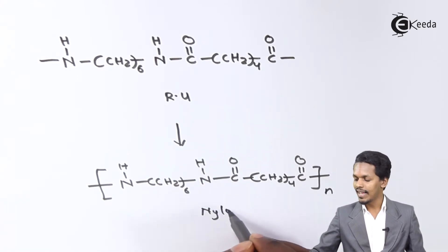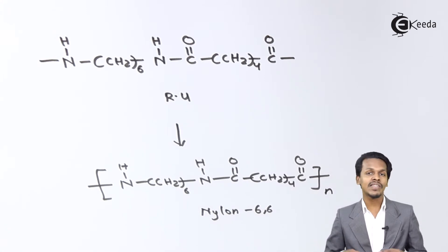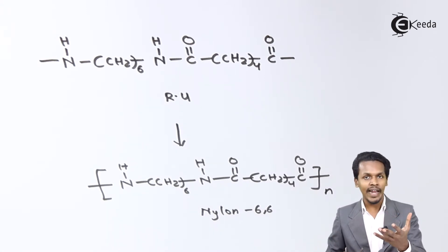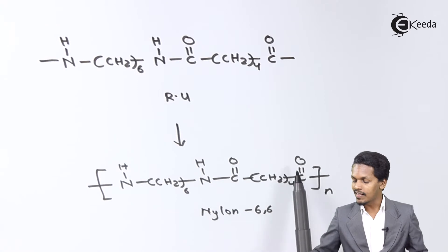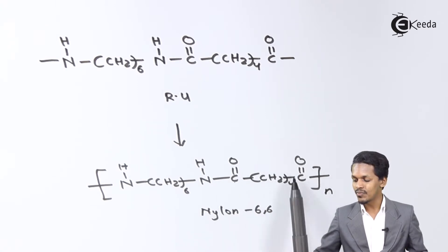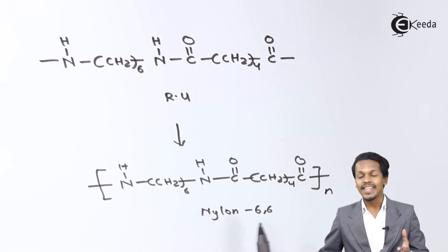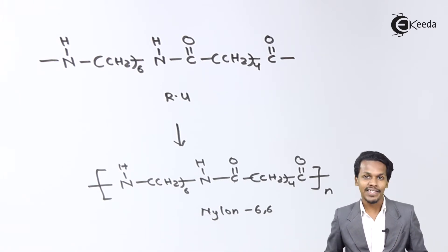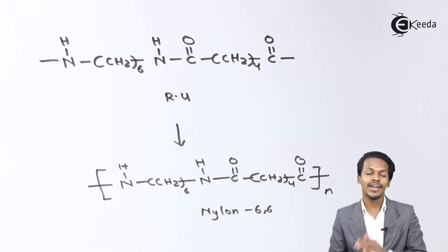The resulting polymer is nylon 6,6. The name '6,6' indicates six carbon atoms from one monomer (hexamethylene diamine) and six carbon atoms from the other monomer (adipic acid: 1+4+1 = 6). That is the preparation of nylon 6,6.